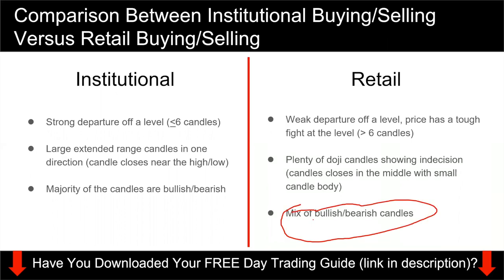Unlike institutional buying and selling where the movement is very clear — all bullish or all bearish candles — with retail you'll see a very mixed set of candles: bullish, bearish, back and forth. You do not see a very clear departure. It's a very slow departure with a mixture of bullish and bearish candles. Hopefully this clears up how retail buying looks, and the case study will help you really understand what I mean.